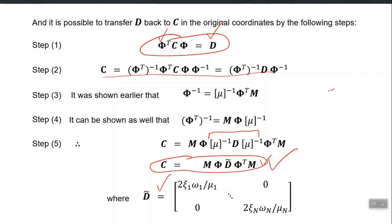All you need to provide to the program is ξᵢ for each mode — for example, 5% damping for all modes, or 5% for the first 3 modes and 2% for the next 3 modes. You have full control on the C matrix with the modal damping approach. You can use experimental results from free vibration tests of real buildings to come up with realistic ξ values to assign to each mode of your new building.